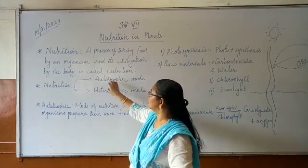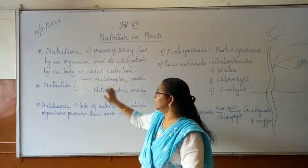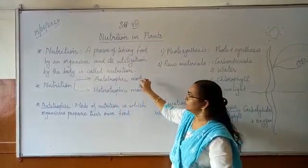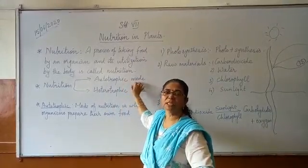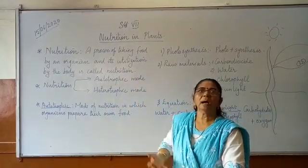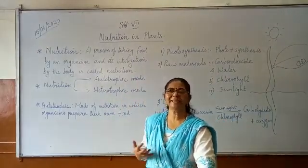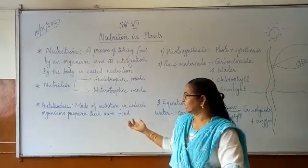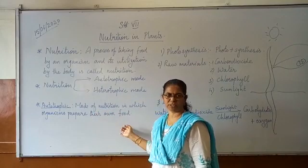One is autotrophic mode of nutrition. Another one is heterotrophic mode of nutrition. What is meant by autotrophic mode of nutrition? The mode of nutrition in which organisms prepare food by themselves using various components is called the autotrophic mode of nutrition.